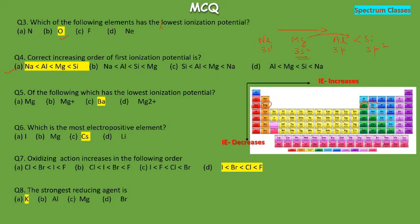The next MCQ asks which has the lowest ionization potential among magnesium, magnesium+, magnesium2+, and barium. Magnesium and barium belong to the same group. As we move down the group, ionization energy decreases, so barium has the lowest ionization energy — irrespective of the fact that magnesium ions carry a positive charge.